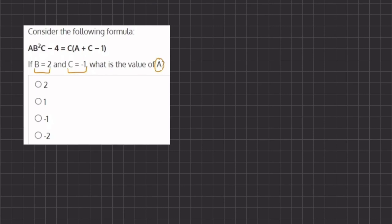So let's plug in the values we have. So here we have A, which we don't know, and instead of B we're going to write 2 squared times C, which is negative 1. And remember, when you have variables that are right next to each other, that means they are being multiplied by one another.